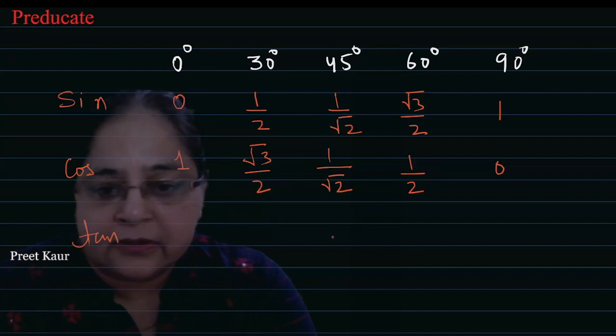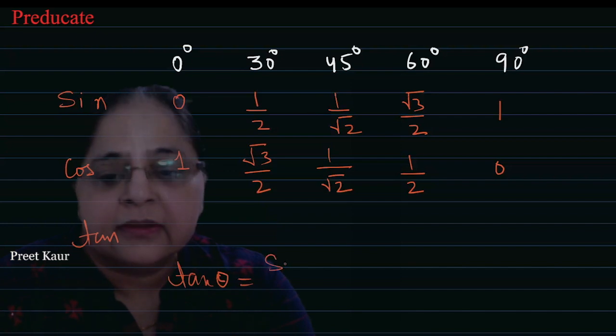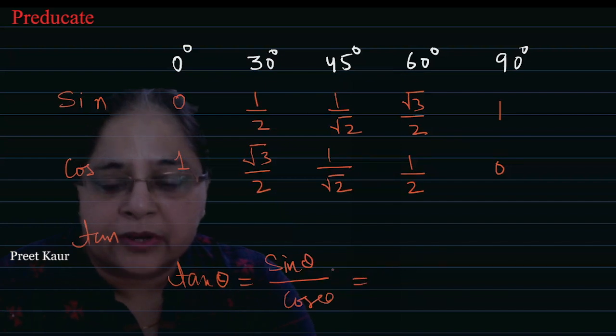Tan theta is sine theta upon cos theta. So its value can be calculated by division. See, 0 upon 1 means tan 0 is 0. And tan 30 degree will be 1 upon 2 divided by root 3 upon 2. So 2 cancels with 2, and it becomes 1 upon root 3.